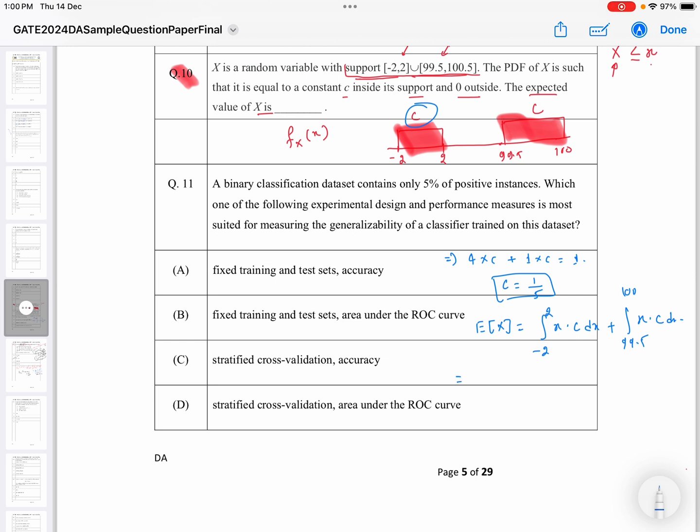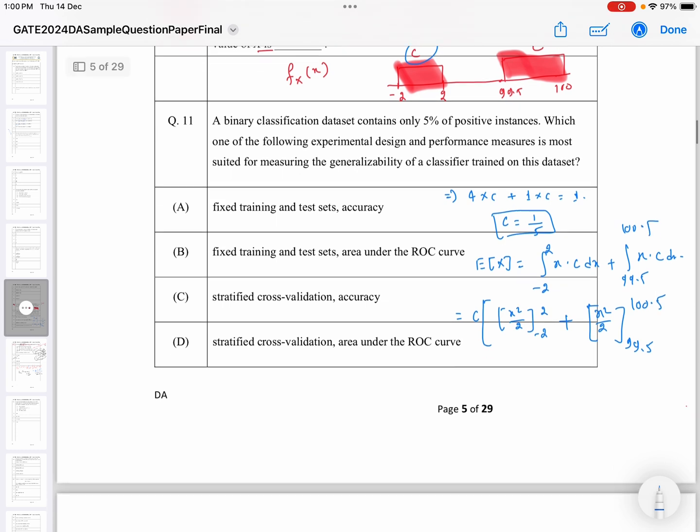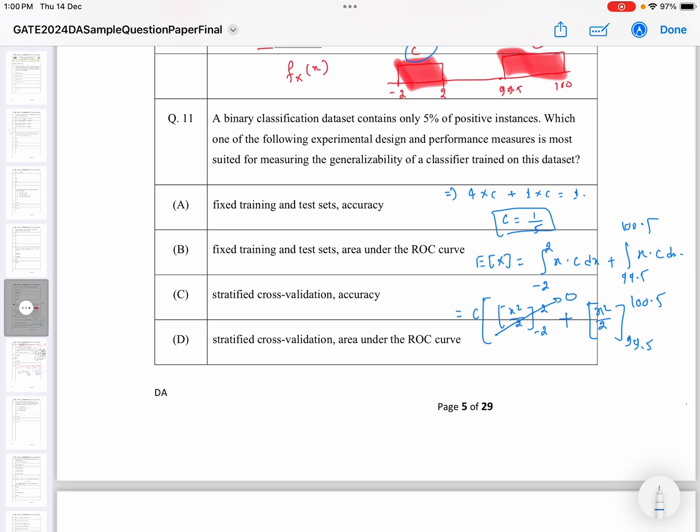So now let's do the calculation. C is common so we can take it outside, and here we will have X²/2 from -2 to 2, plus here we will have X²/2 from 99.5 to 100.5.